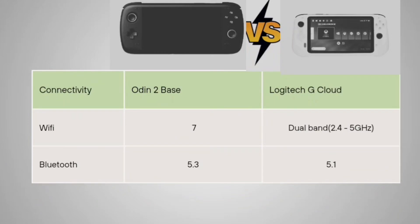Coming to the connectivity sector: Wi-Fi is version 7 in the Auden 2 Base, and your Logitech G Cloud is giving you dual-band 2.4 as well as 5 GHz. Bluetooth is version 5.3 in the Auden 2 Base and your Logitech G Cloud is giving 5.1. So connectivity-wise, your Auden 2 Base is the best.